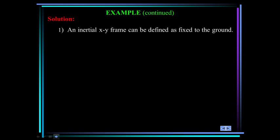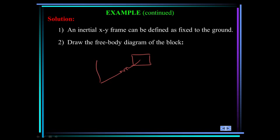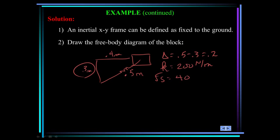So the solution. Step 1, we'll define the inertial xy frame as fixed to the ground. Step 2, draw a free body diagram on the block. So for the position shown, the spring is, this is 0.4 meters and this is 0.3 meters. So the spring is stretched to 0.5 meters. And you remember the unstretched length was 0.3 meters. Therefore, the change in length of the spring is 0.5 minus 0.3 or 0.2.